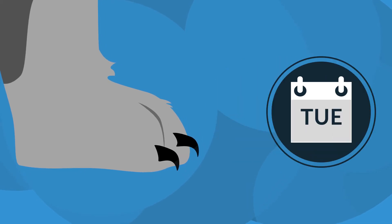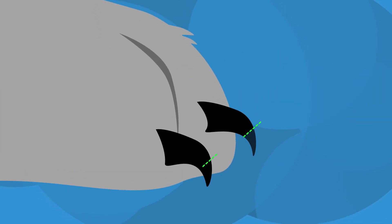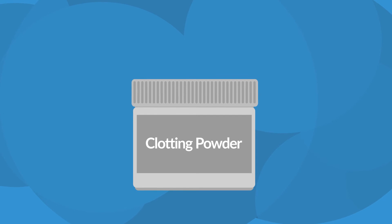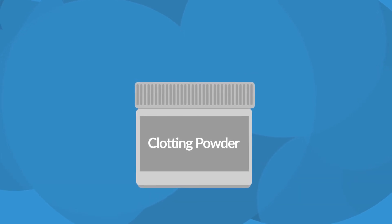Over time, your cat's comfort level will increase, allowing you to cut multiple nails in one sitting. It's always a good idea to have some clotting powder on hand, just in case you do cut into the quick. Baking soda can also work in a pinch.